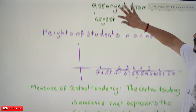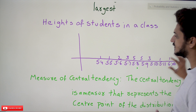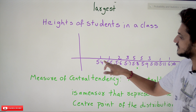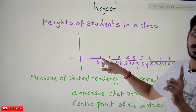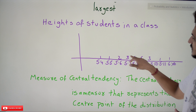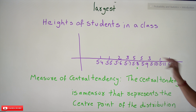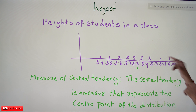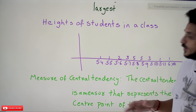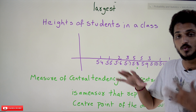With an example you will have a better understanding. Consider the heights of students in a class. If you collect the heights and arrange them in sequence, measured in inches: 5.4 inches — one student, 5.5 inches — one student, 5.6 inches — two students, 5.7 inches — three students, 5.8 and 5.9 — five students, 5.10 — three students, 5.11 — one student, and six feet — one student. This is how we distribute the data.